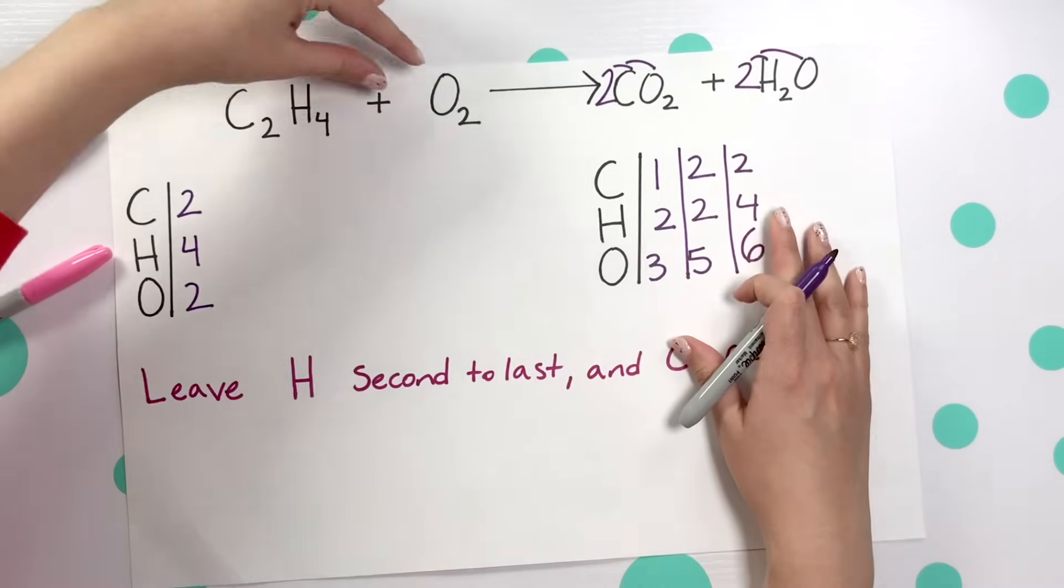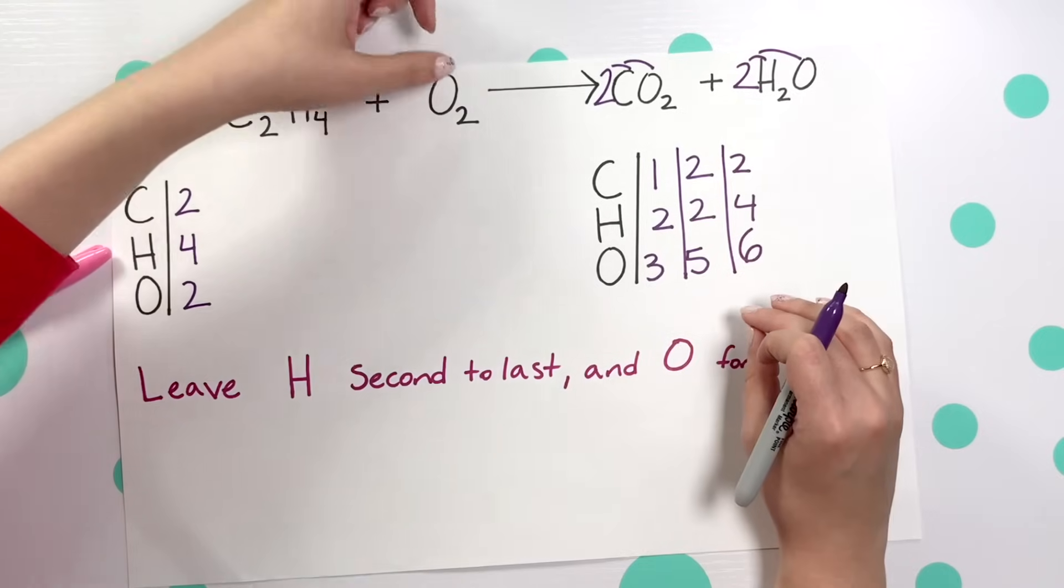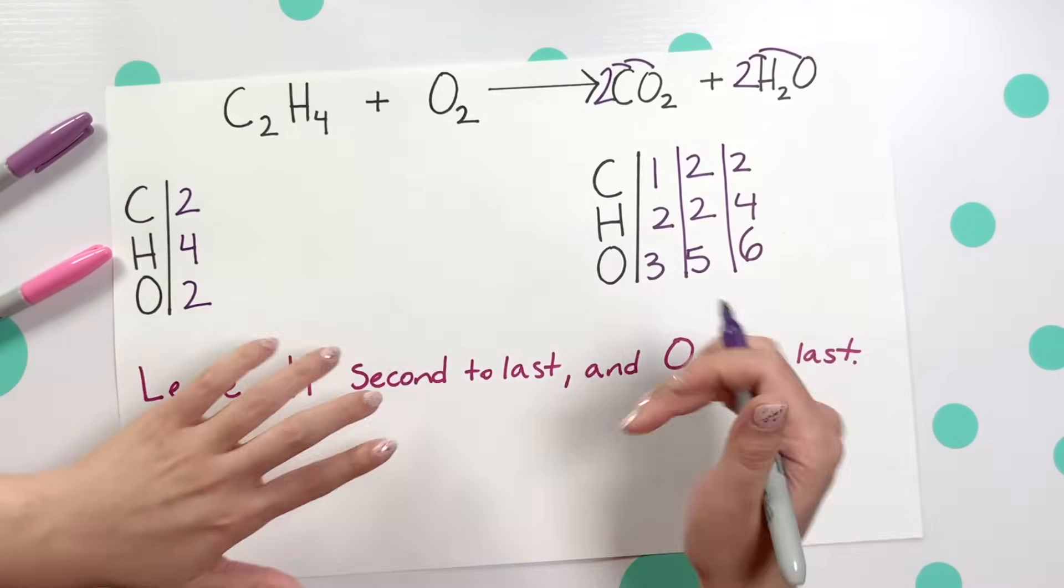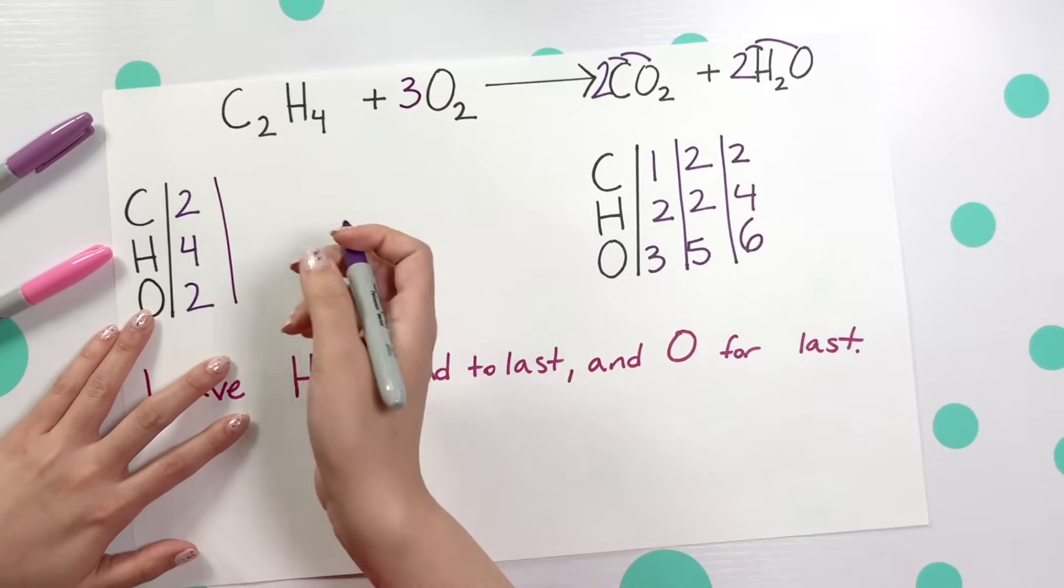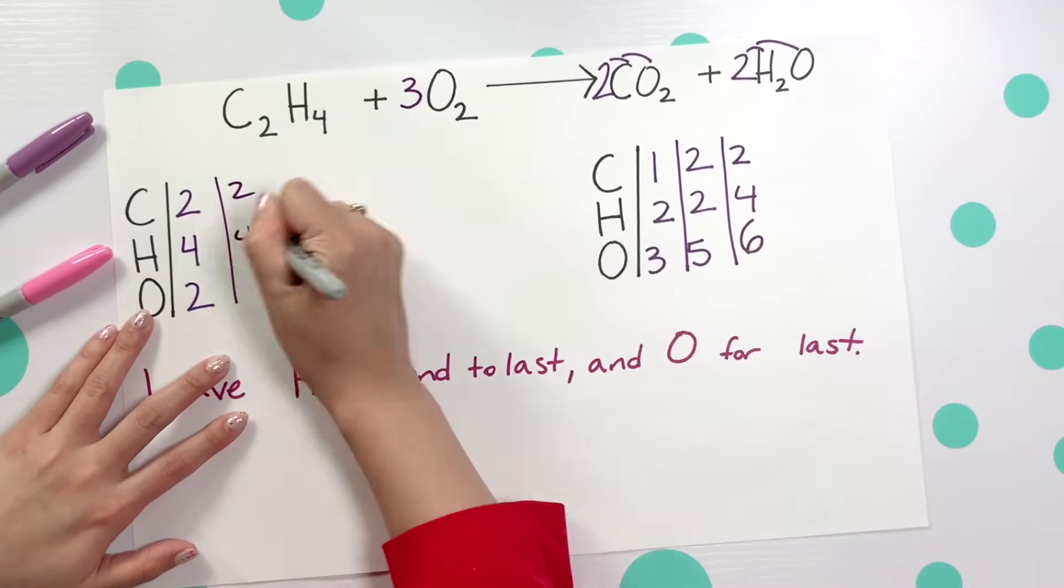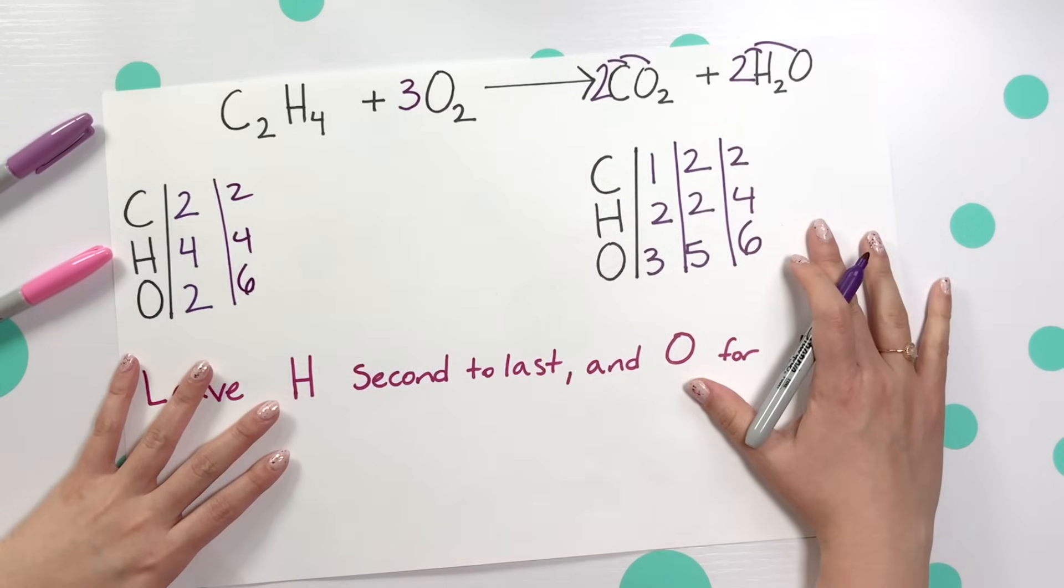So what do we need to multiply oxygen by to get six? Three times two will give us six. So I'll place a three in front of that O2 and recount everything on our reactant side and we'll see that three times that two gives us six and right there we are balanced.